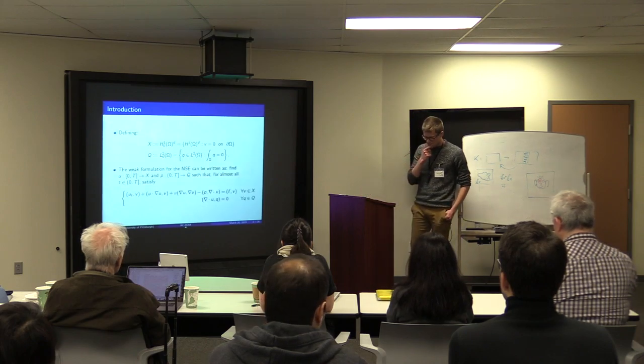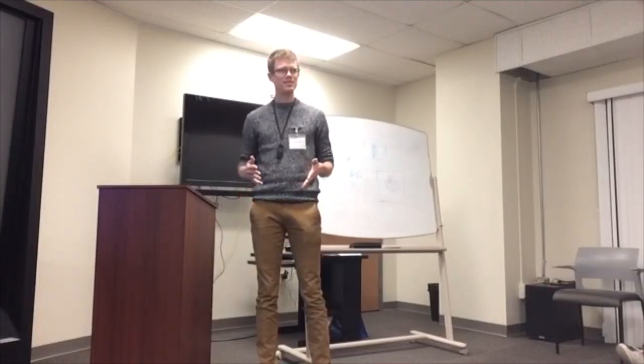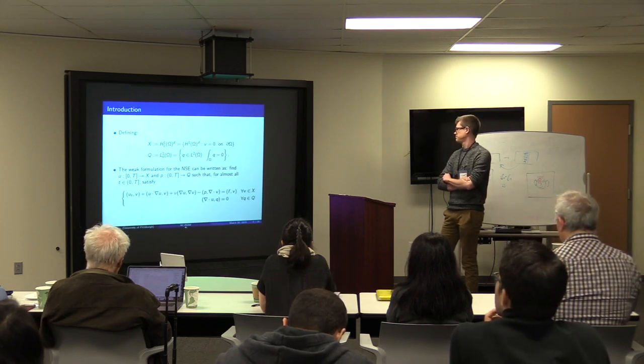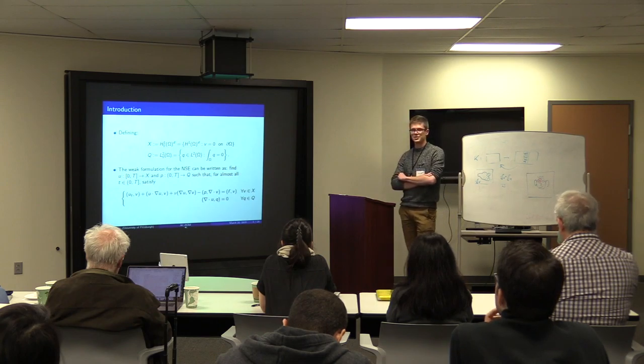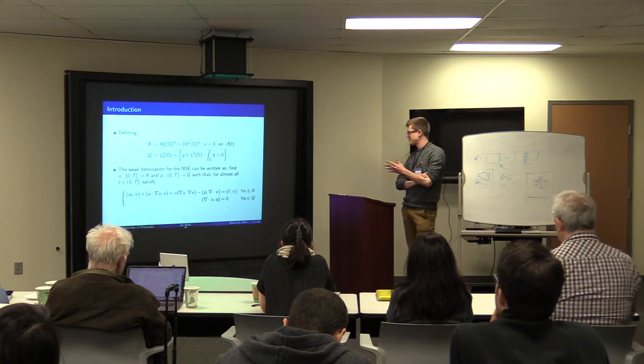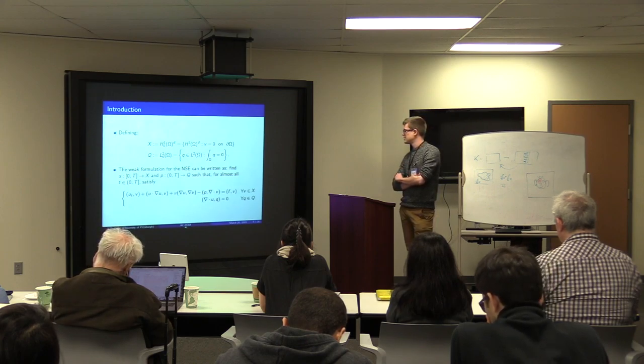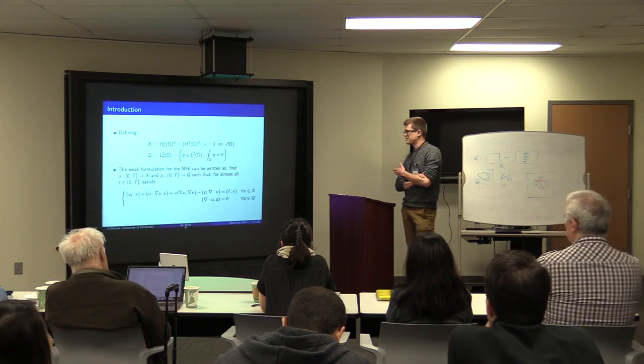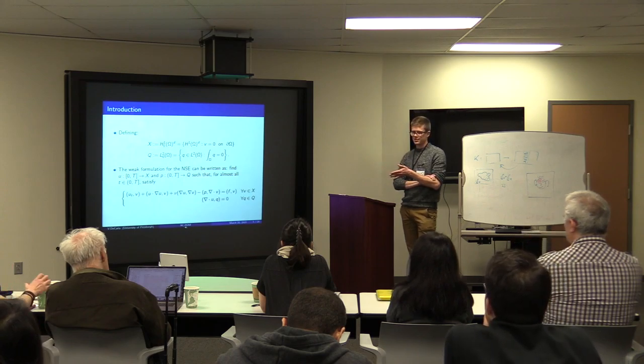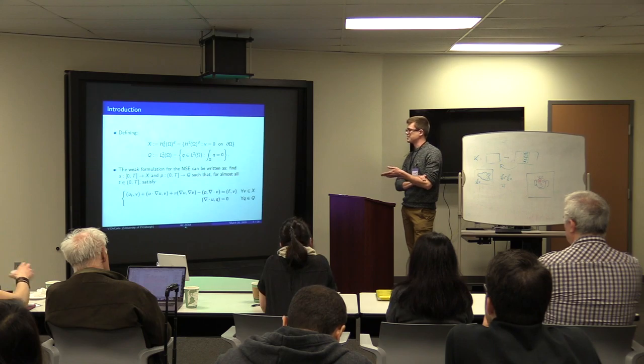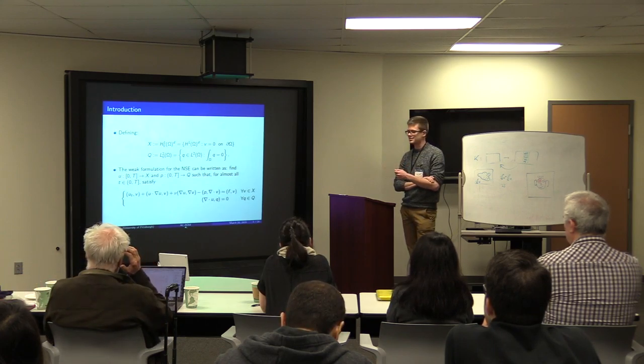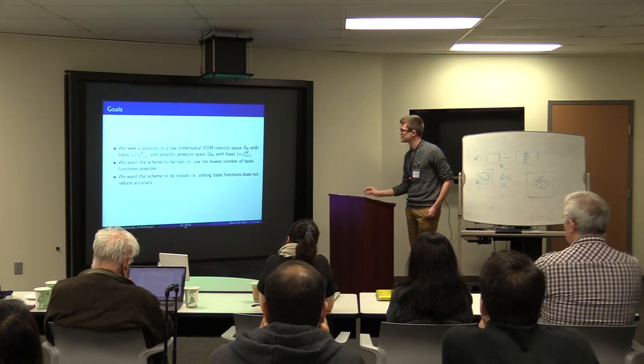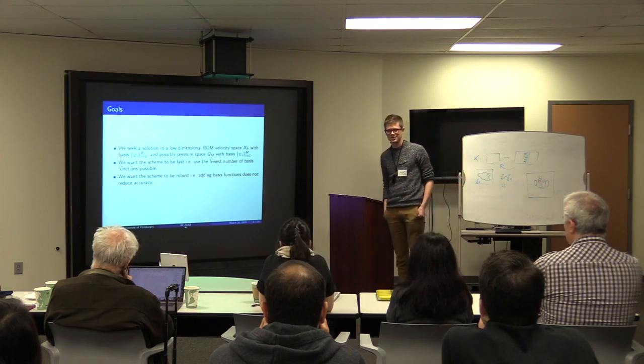So in the weak formulation of this, because we're going to be using Galerkin methods to solve this, we pick an appropriate velocity space X which is naturally H1 zero, and the pressure space are mean zero L2 functions. And you multiply by test functions, integrate by parts, and here's your weak formulation.